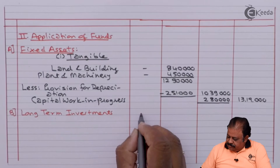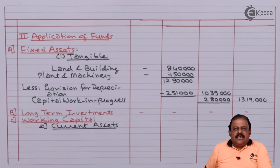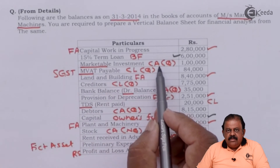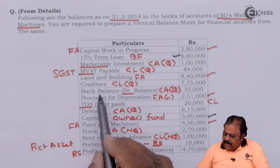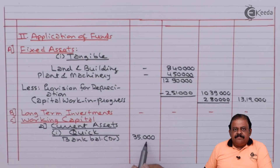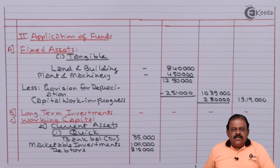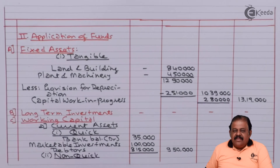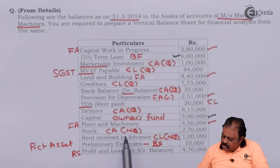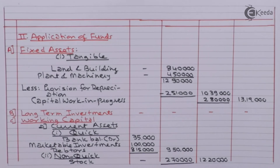No long-term investments. Next, working capital. Under current assets — quick current assets: marketable investments of 1 lakh, bank balance of 35,000, and debtors of 8 lakhs 15,000, giving total quick current assets of 9 lakhs 50,000. Non-quick current asset: stock of 2 lakhs 70,000. Total current assets: 12 lakhs 20,000.